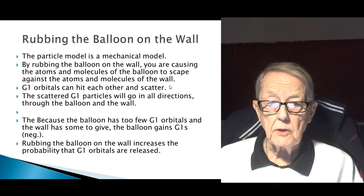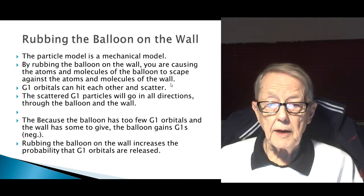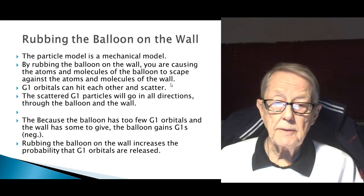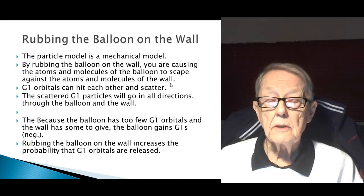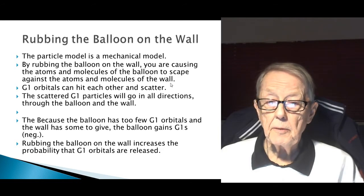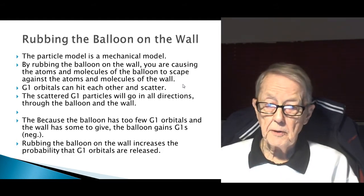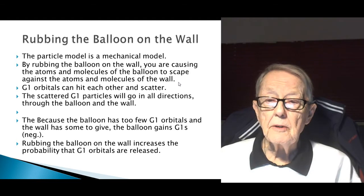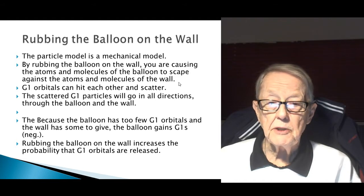The scattering G1 particles would go in all directions — you don't know which way they're going to go. The ones released from the balloon may go through the balloon and out, and the ones in the wall go backwards through the wall and out. But some of them go from the balloon to the wall and from the wall to the balloon. Because the balloon has too few orbitals or the ability to accept them, some of the G1 particles get trapped in the balloon, and hence the balloon gains G1s and becomes negative.